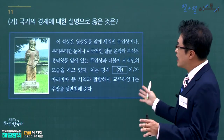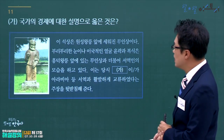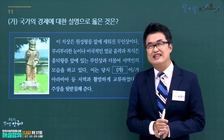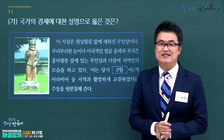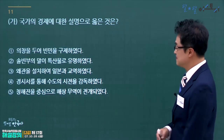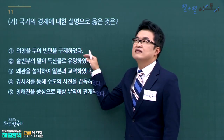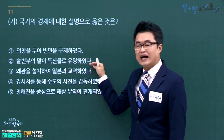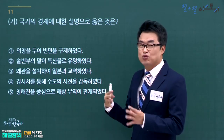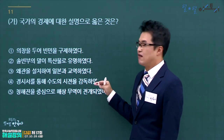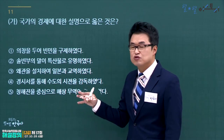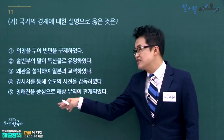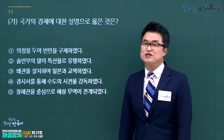각 국가의 경제에 대한 설명 문제입니다. 원성왕은 신라하대 독서삼품과와 연결됩니다. 의창은 고려부터, 솔빈부의 말은 발해 특산물, 외관 설치 일본교역은 조선, 경시서와 수도 시전은 고려, 청해진을 중심으로 해산물 무역을 한 장보고는 신라입니다. 정답은 5번, 장보고와 청해진입니다.